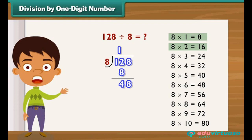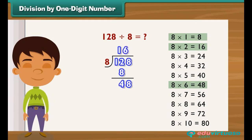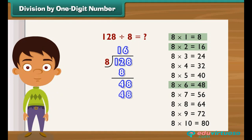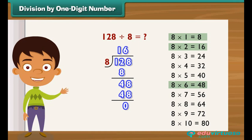Now, divide 48 by 8. 8 sixes are 48. Write 6 above 128 next to 1. Subtract 48 from 48 — the answer is 0. So, 128 divided by 8 is 16. The division leaves no remainder.